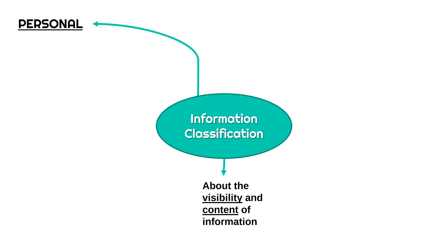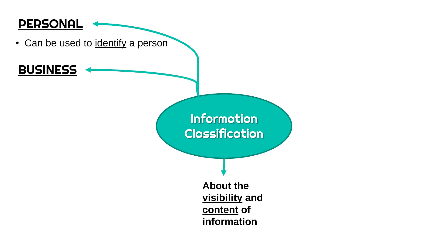Starting with a fairly simple one: personal information. This is information which can identify a person. Some personal information on its own might not identify a person, but it can be used with other personal information to narrow down to a particular person — somebody's name is personal but on its own does not necessarily identify them. Business information, on the other hand, is not about individuals; it's about an organization.